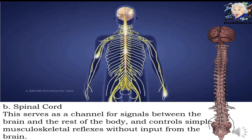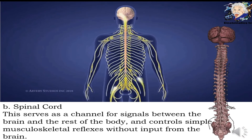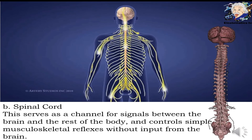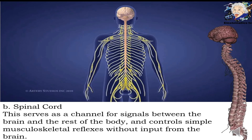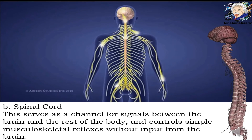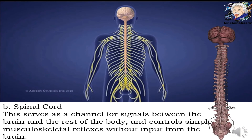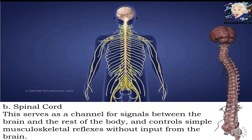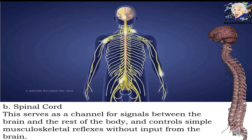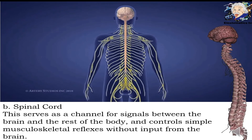Another organ that composes the central nervous system is the spinal cord. This serves as a gateway or passageway for signals between the brain and the rest of the body. It also controls simple musculoskeletal reflexes without input from the brain.